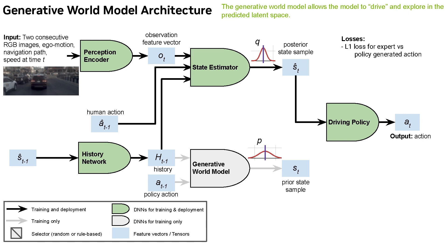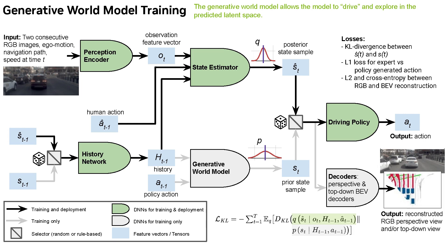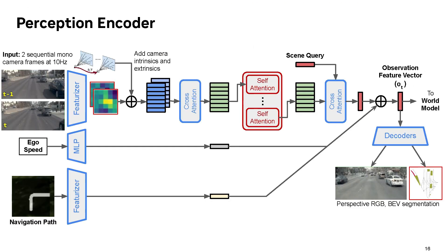We sample prior and posterior world states from the generative world model and the state estimator. KL divergence between the prior and posterior states pushes the agent back towards expert states whenever it drifts. We also decode the latent states into an RGB image through diffusion or a bird's-eye view semantic representation of the world. For the perception encoder, we architected a novel transformer-based encoder that allows additively combining tokens from many input modalities.